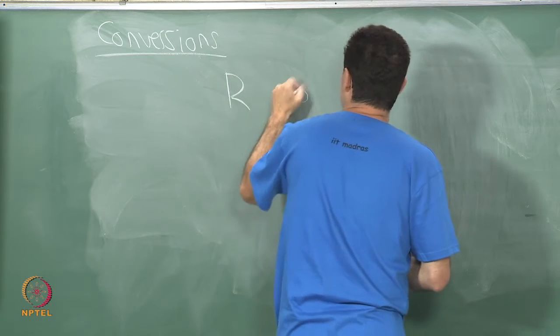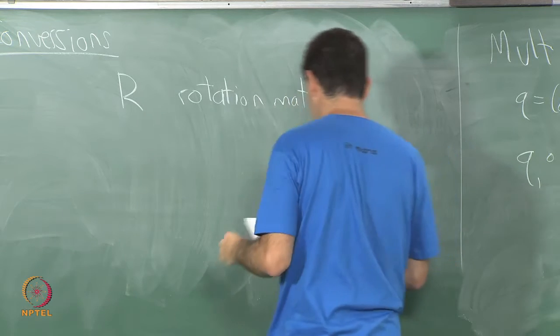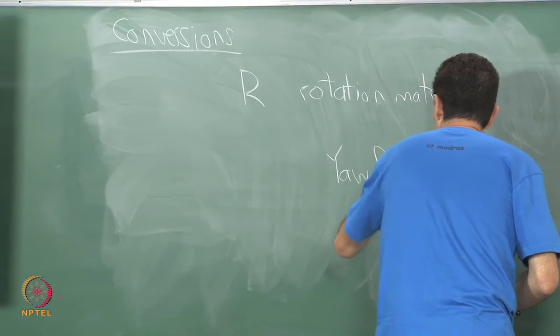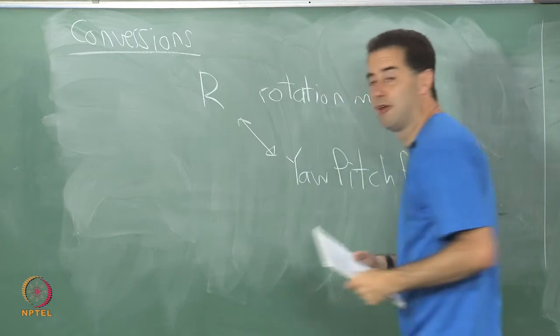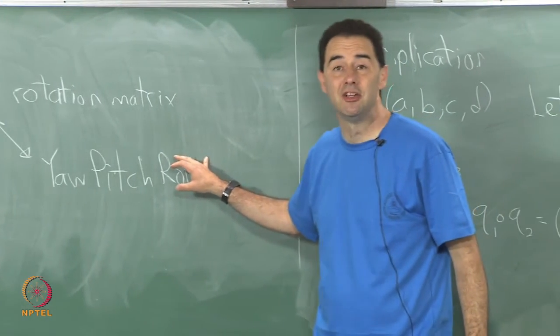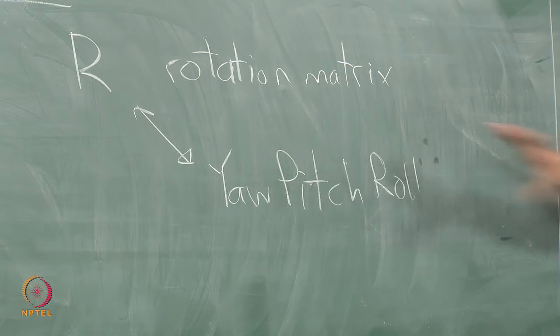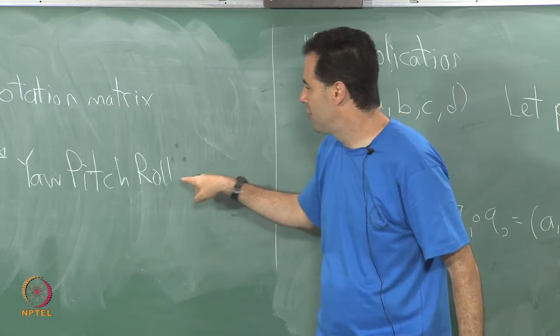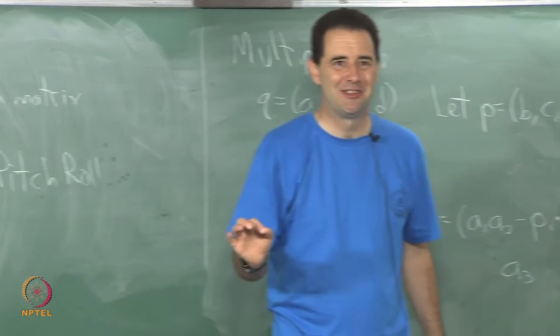We started with the rotation matrix and I gave you yaw pitch and roll right. That is the first thing we did and you can go back and forth between these, but you have to be very careful about the problems I talked about: the kinematic singularities, the non-uniform representation and just generally because of non-commutativity it gets complicated. When you have individual rotations and you are not combining them it is nice, but that is because it is based on three different axis angle representations that happened to be the coordinate axes right.